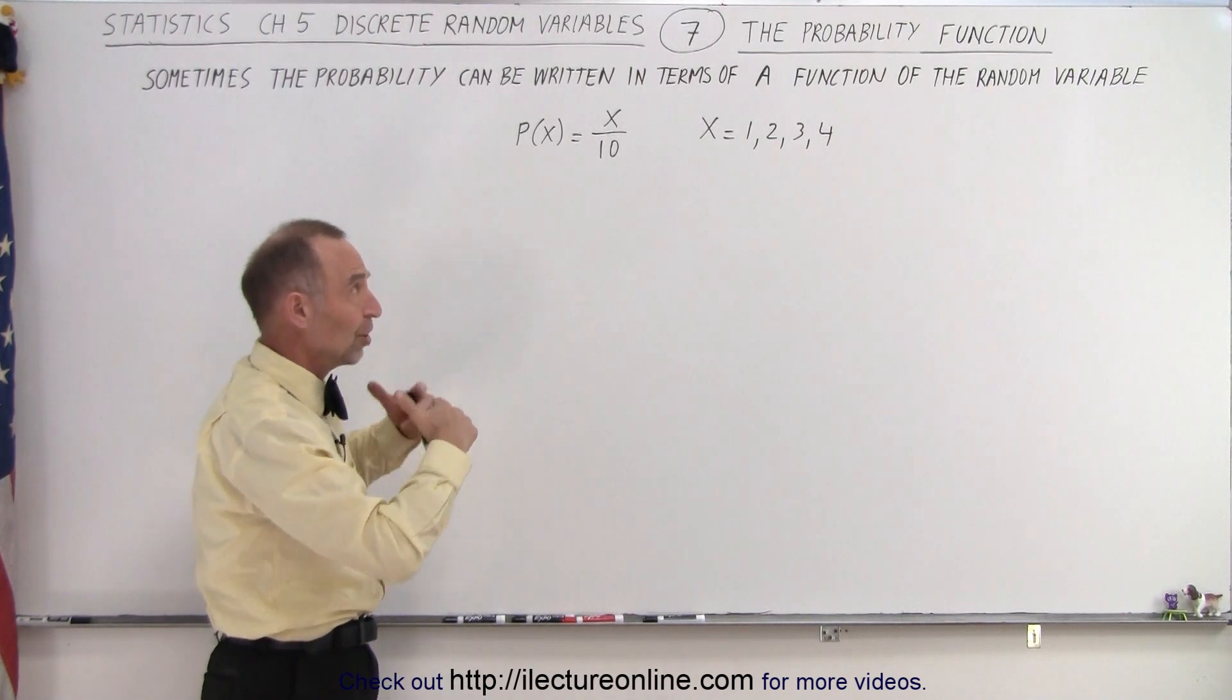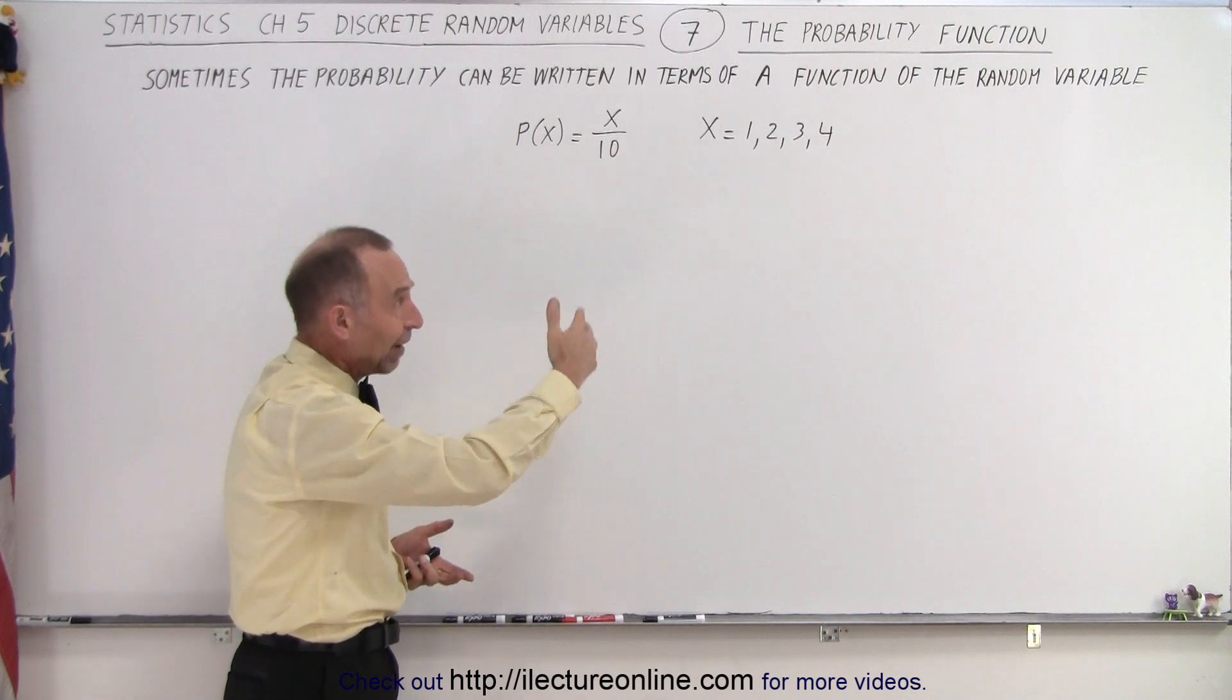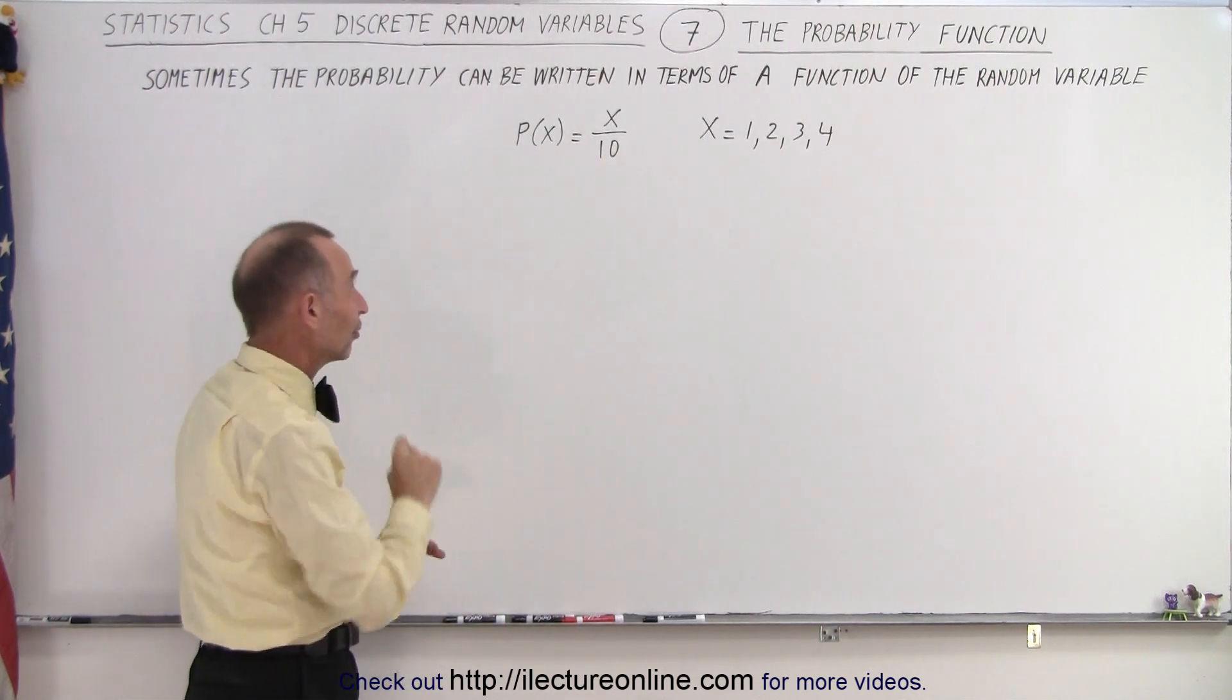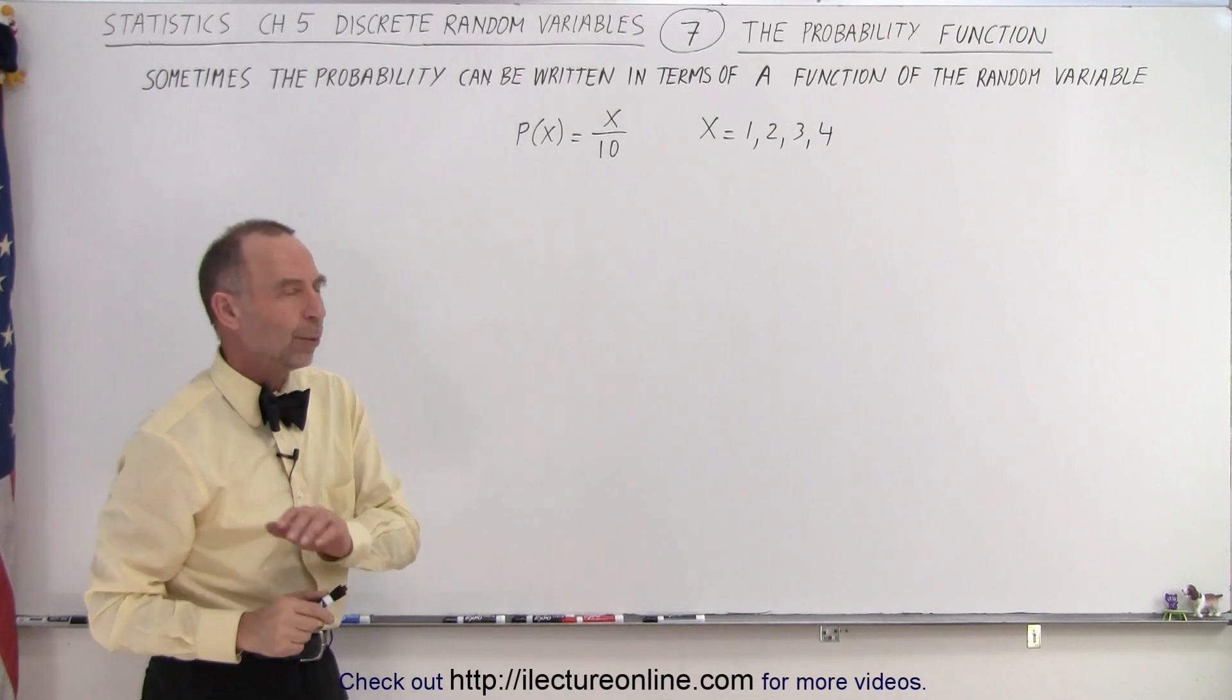If we change the number values, if we make it 5, 6, 7, 8, and so forth, it wouldn't be possible to have the function looking like that. So let's see why that is.